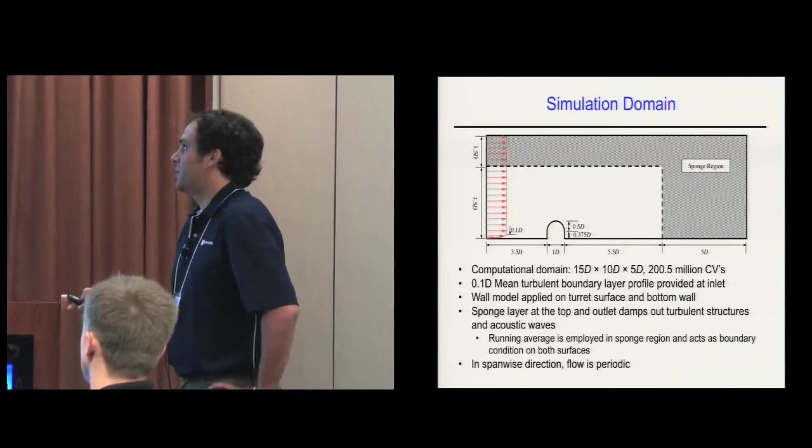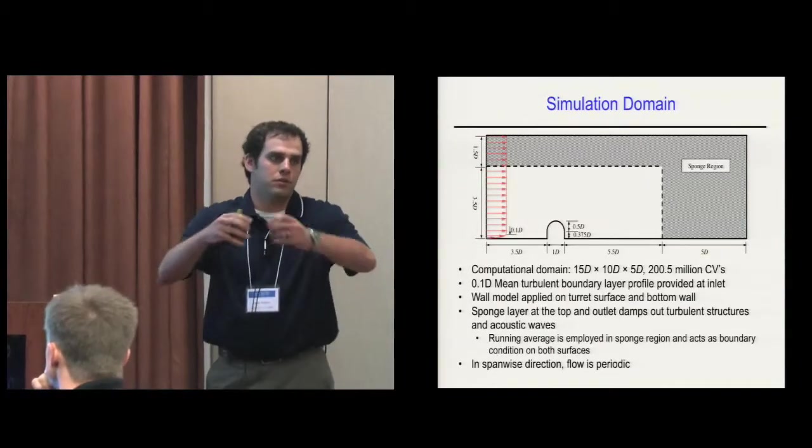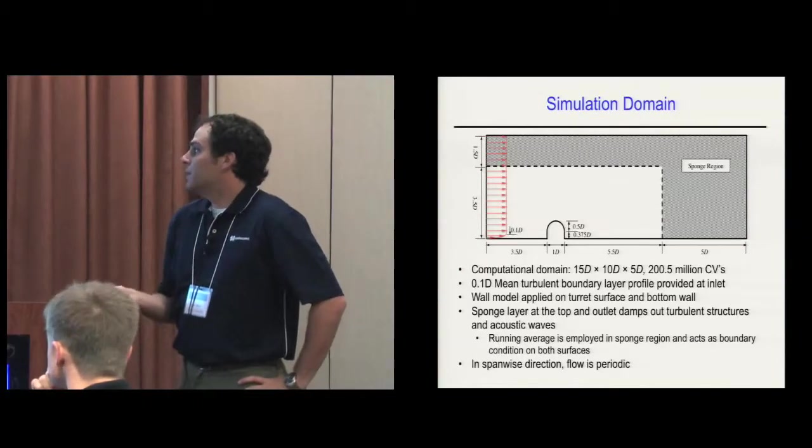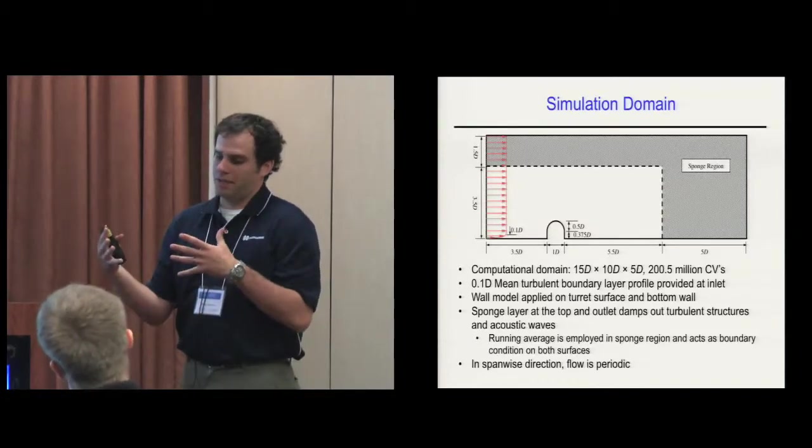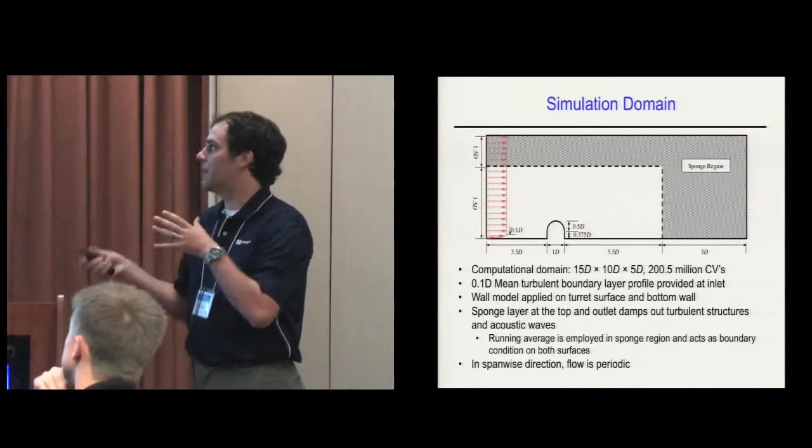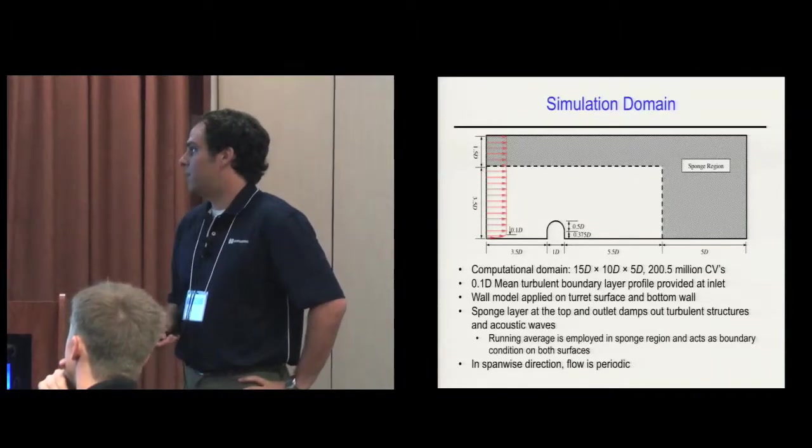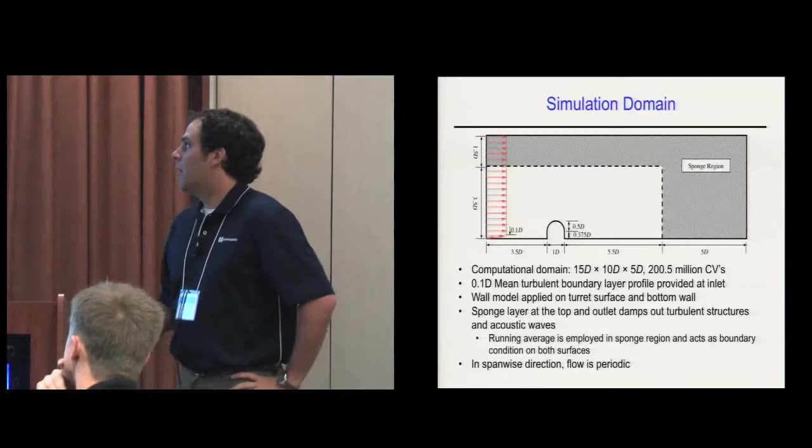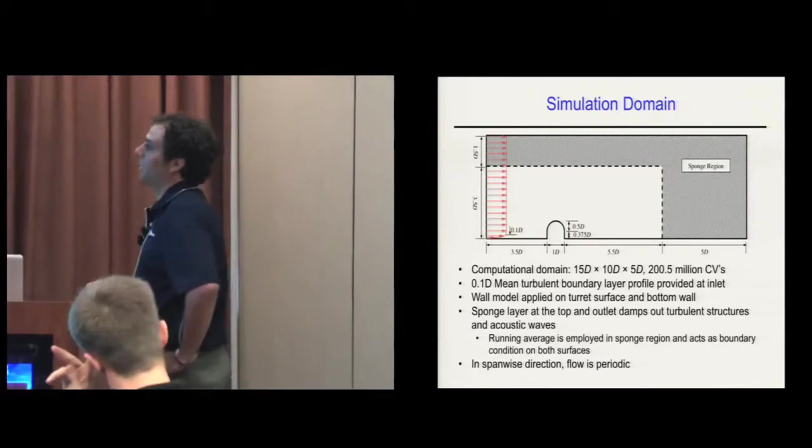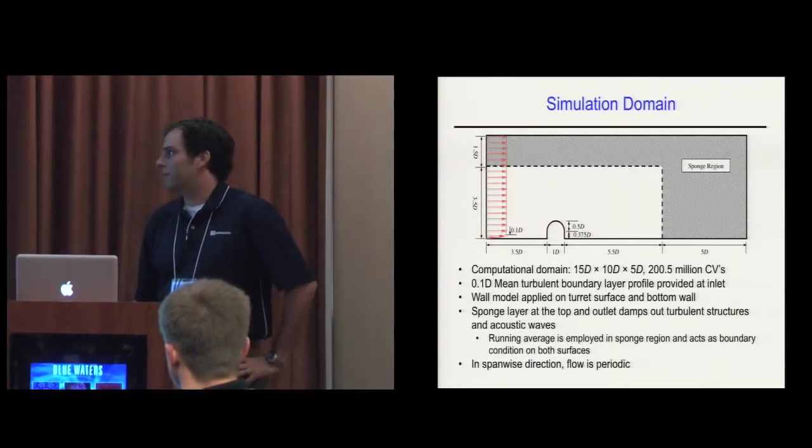The wall model is applied on these walls and the turret surface. The shaded region is what we call a sponge region, a numerical sponge that absorbs acoustic and vortical structures so they don't reflect back inwards. In the spanwise direction, the flow is periodic. The domain is 10 diameters wide in the spanwise direction and 5 diameters tall. We use 200.5 million control volumes.